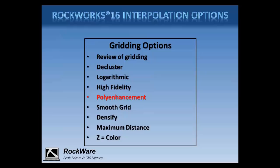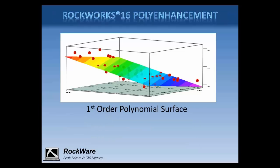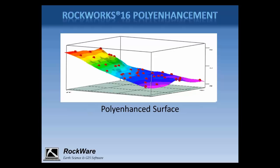Next on the list is polyenhancement. When polyenhancement is turned on, the program first fits your data to a polynomial surface. In this example, the red points represent measured elevations, and the planar surface represents a best-fit first-order polynomial surface. The program then warps the polynomial surface to match your data using a method similar to the high-fidelity option. You can choose the order of the polynomial surface, or have the program run through available options — we support first through sixth order — and it will choose the best match. This is most useful when your data reflects a regional or local trend, particularly for larger-scale structural surfaces and groundwater elevations. This option is only available for gridded surfaces, not 3D block models.